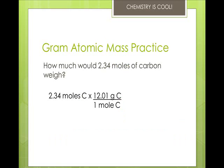12.01 grams of carbon has the same number of atoms as 1.01 grams of hydrogen, and 55.85 grams of iron, because those are the atomic mass units. So we can write this as 12.01 grams of carbon equals 1 mole of carbon.